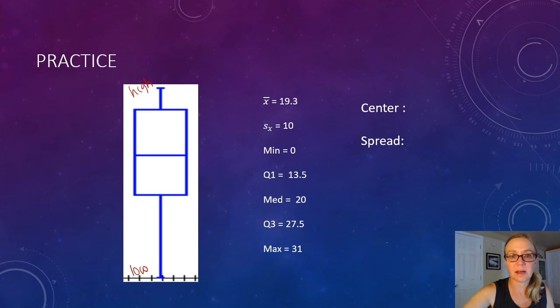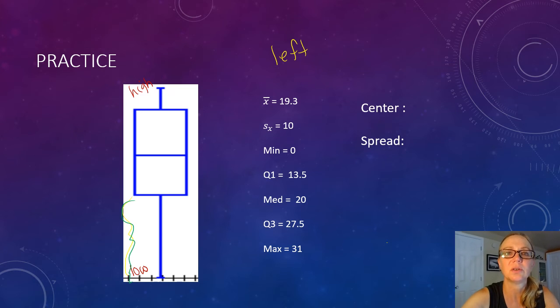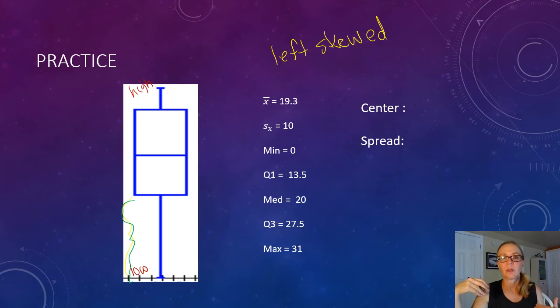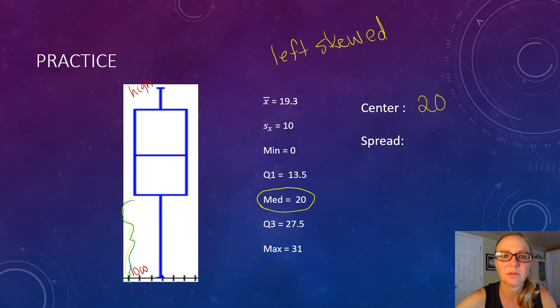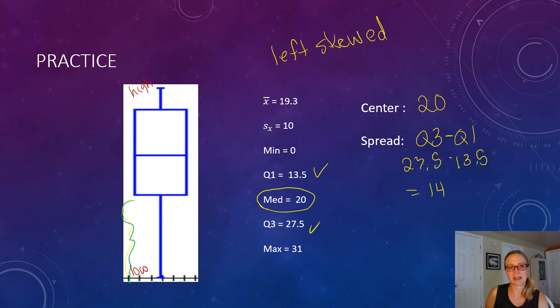Now that we know that, we can see, because of this long tail, this long side right here, that this data is left skewed or negatively skewed. The skew is on the low end. When you have skewed data, for center, you use the median, and for spread, you use the interquartile range, which in this case is 27.5 minus 13.5, which equals 14.